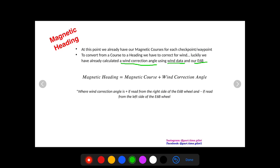Now the wind correction angle once we have it we can use this equation to convert from course to heading. We just simply take the magnetic course plus the wind correction angle. But the only tricky part is the wind correction angle can be positive or negative. Now it's positive if read from the right side of the E6B wheel and negative if read from the left side of the E6B wheel.